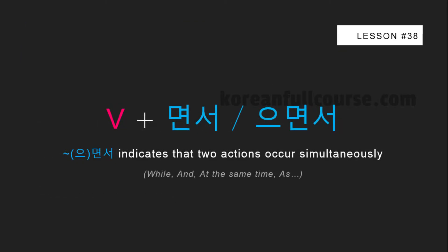In today's lesson, you will learn how to use the grammatical construction 으면서. In English, 으면서 is translated as 'while' and 'at the same time as.' 으면서 can be used with verbs as well as adjectives and even nouns. In this tutorial, we will cover all three use cases. 으면서 is used when it is necessary to indicate that two actions occur simultaneously.